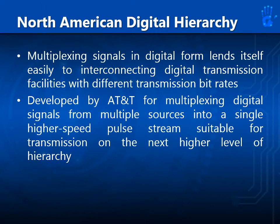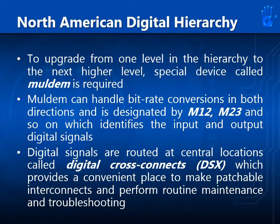Multiplexing signals in digital form allows easy interconnection of digital transmission facilities with different bit rates. The North American Digital Hierarchy was developed by AT&T for multiplexing digital signals from multiple sources into a single higher-speed pulse stream. To upgrade between hierarchy levels, a special device called MOLDEM is required, which handles bit rate conversions in both directions — designated M12, M23, and so on. Digital signals are routed at central locations called digital cross-connects or DSX, which provide patchable interconnects and support maintenance and troubleshooting.